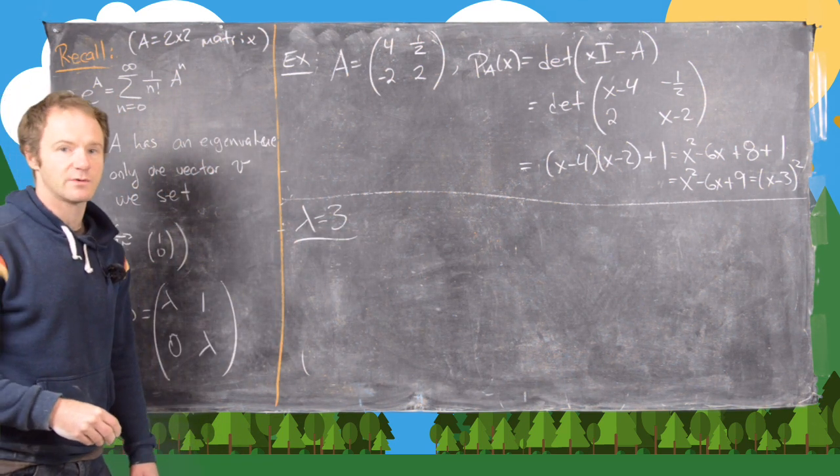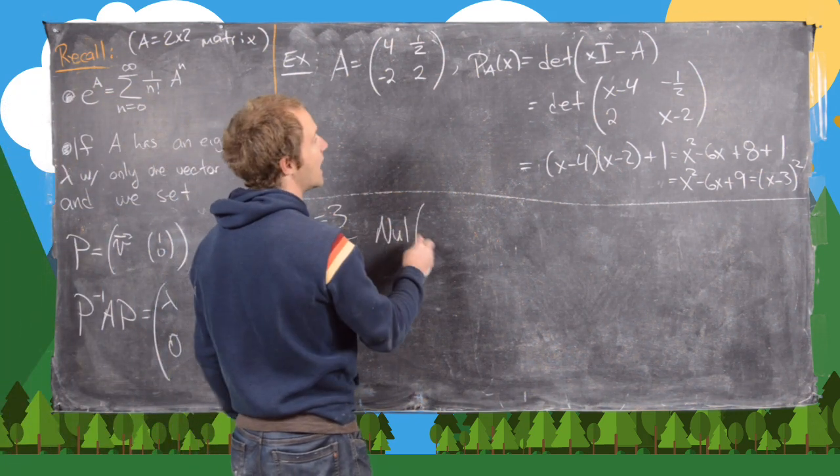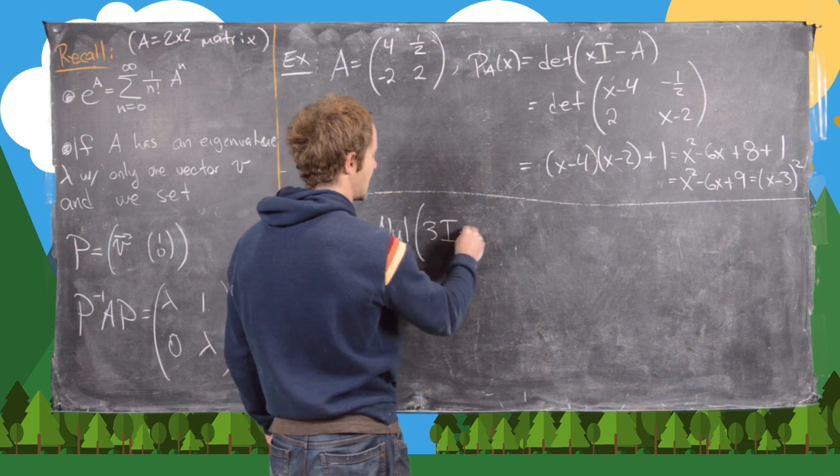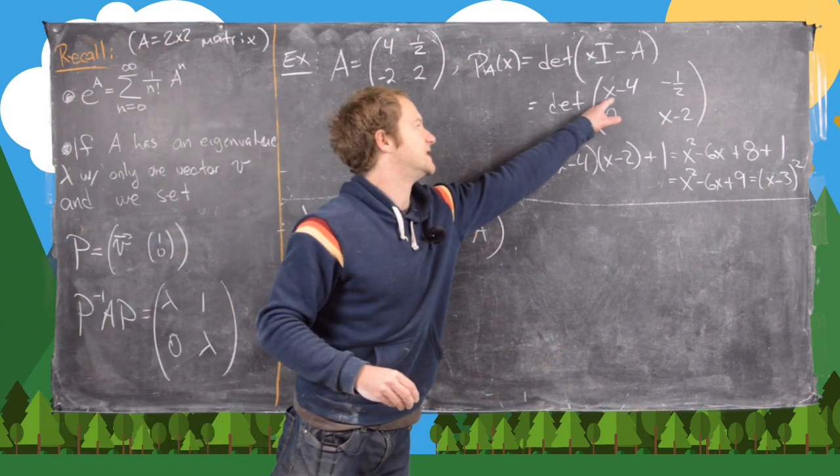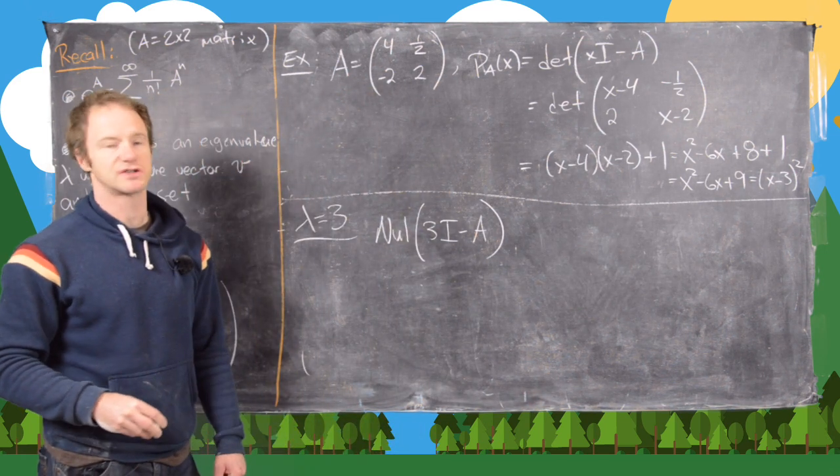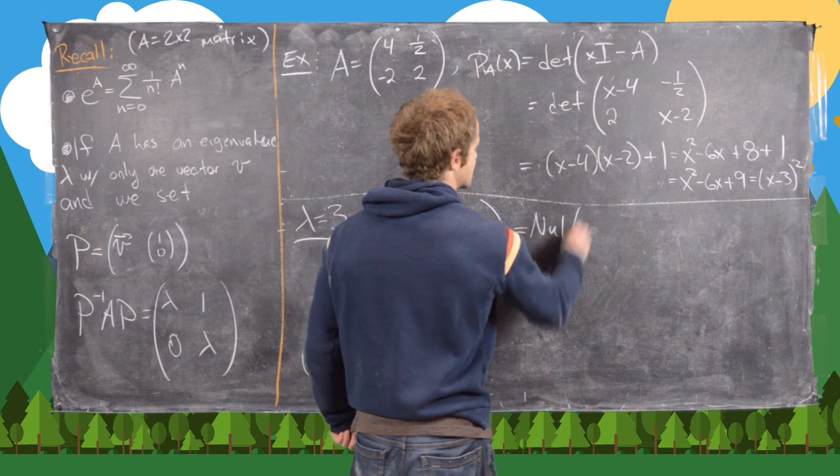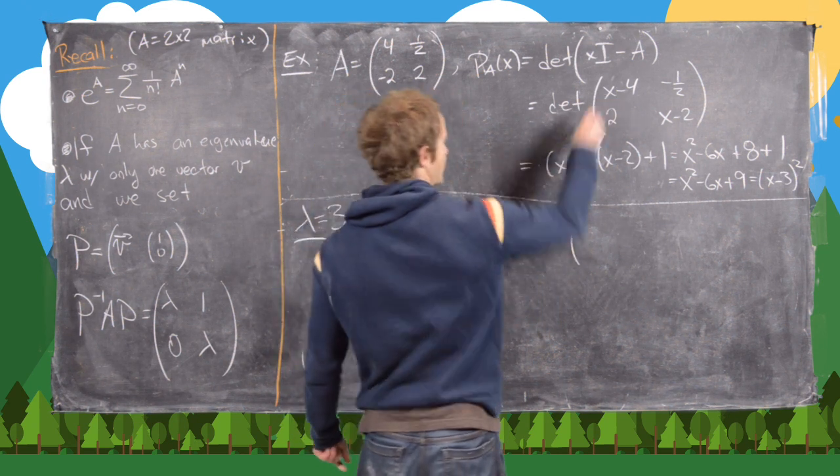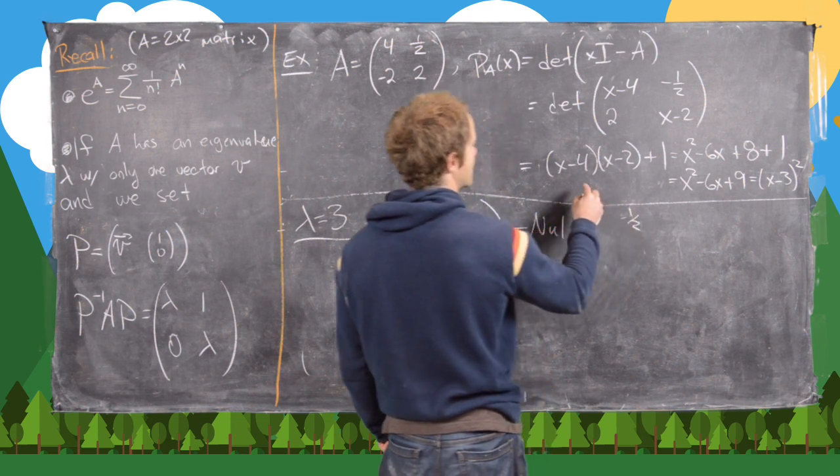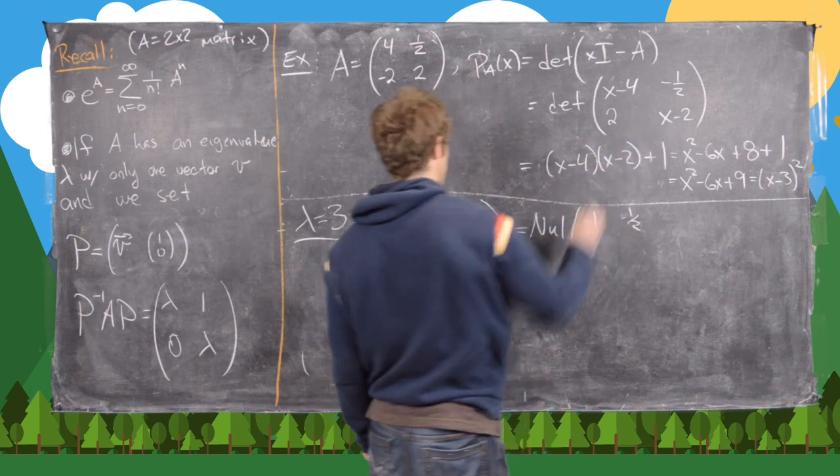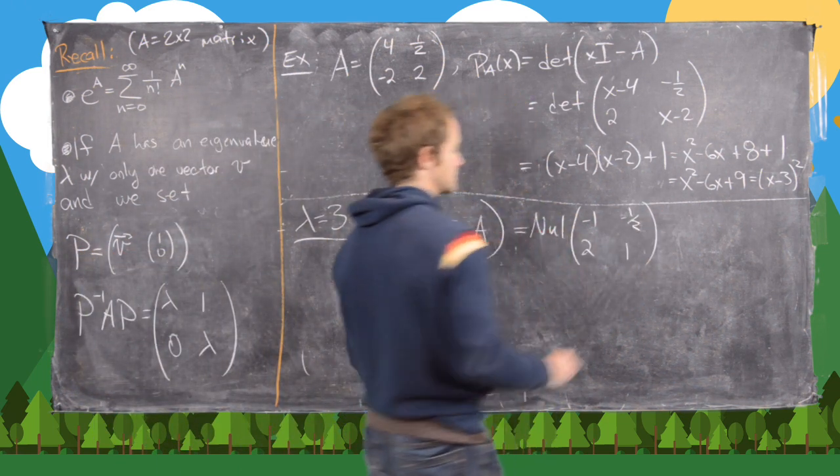Now the next thing we want to do is find our eigenvector, which means we need to look at the null space of 3I - A. In other words, the null space of this matrix where we set x equal to 3. So let's see. That's going to be the same thing as the null space of [-1, -1/2; 2, 1]. Okay.